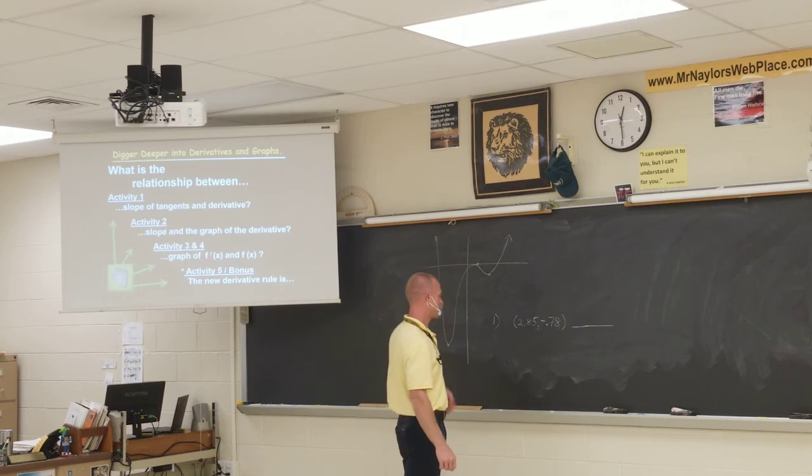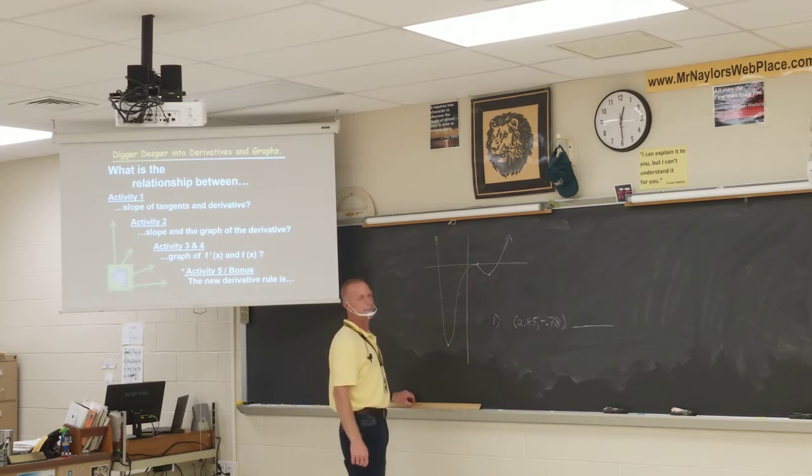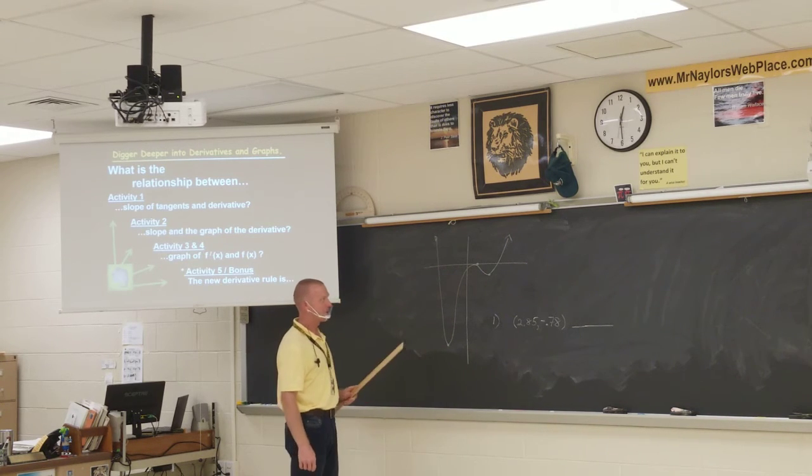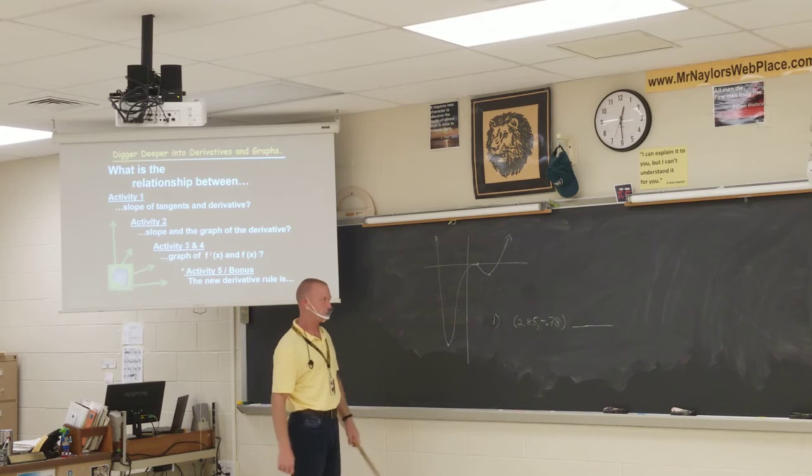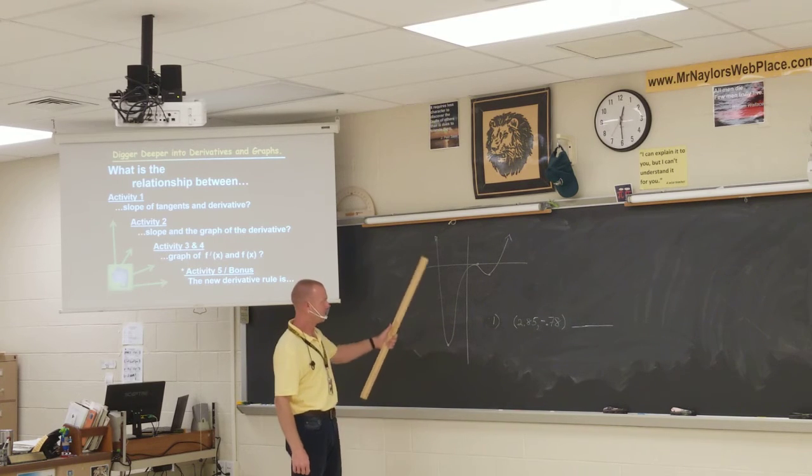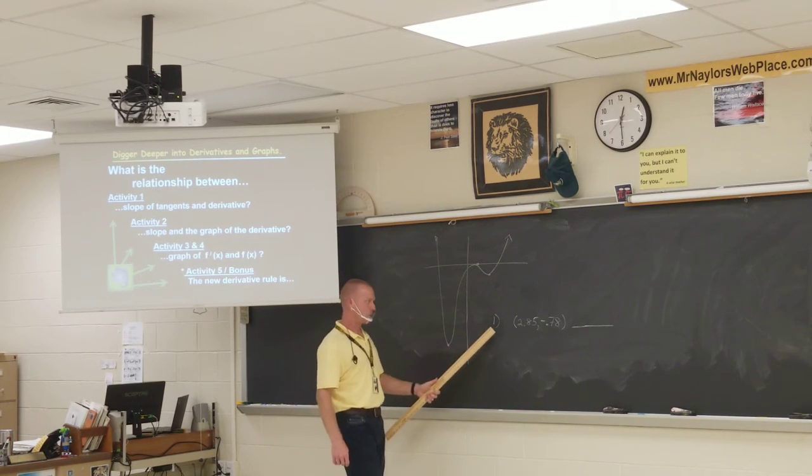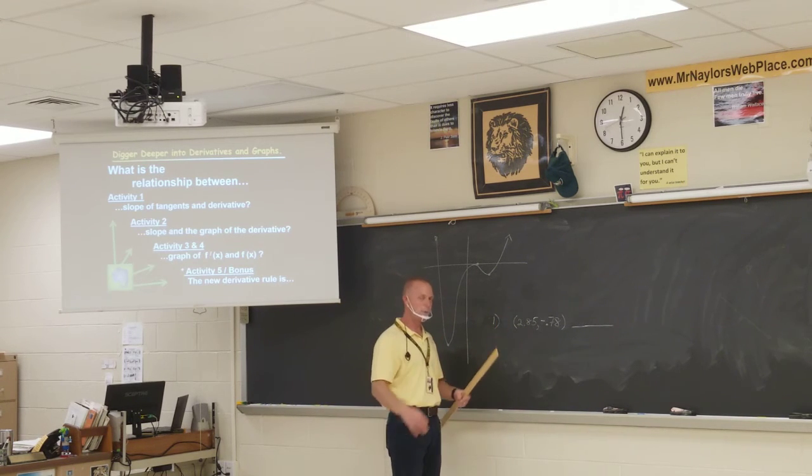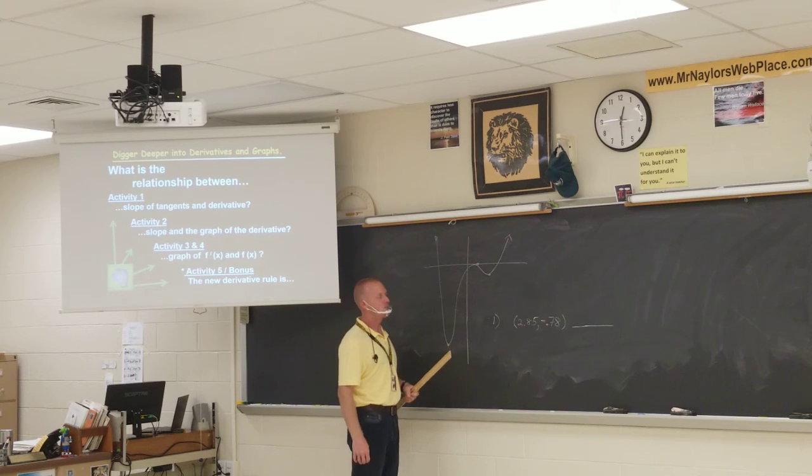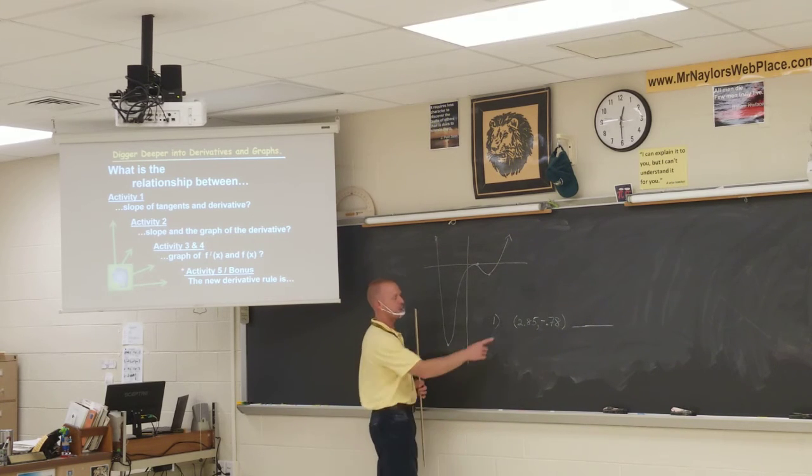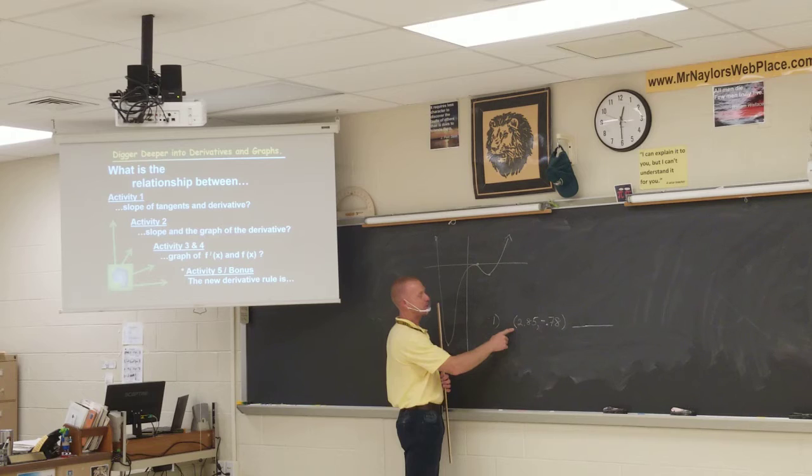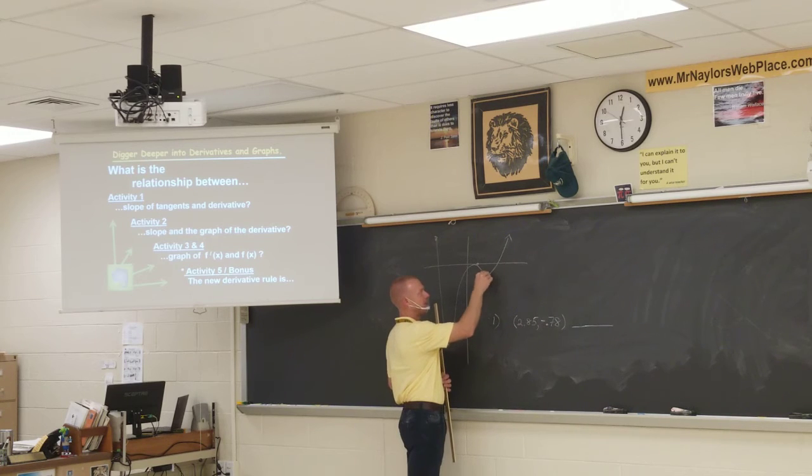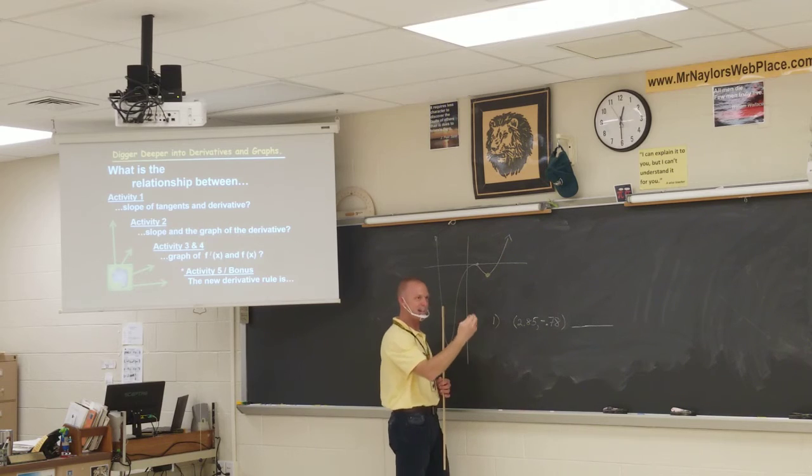So I'm going to get you started here with the first activity. I said that you kind of already know what's going on here, but let's still make sure that you're off to the right track. Here's a function, and you can see that I've given you some points. These points appear to be sort of weird, like just random. I'm trying to take you to a special place, at least as close as we can get. The point 2.85, negative 0.78, is really close to this minimum. So let's make it the minimum.